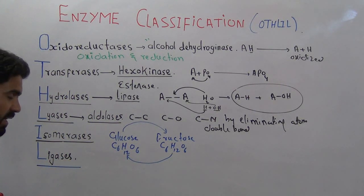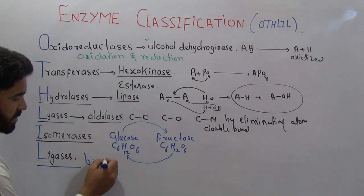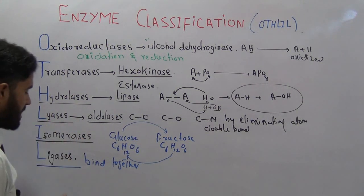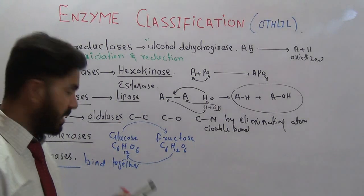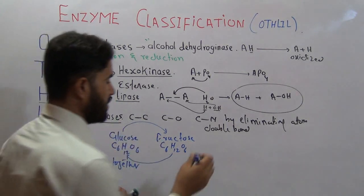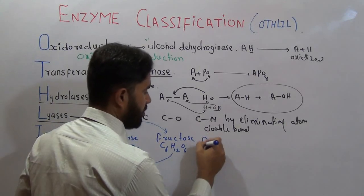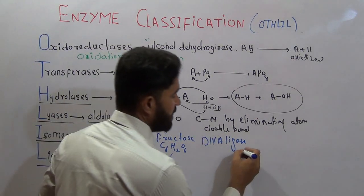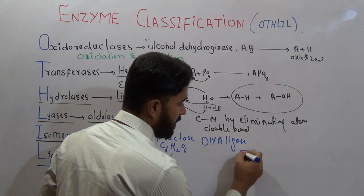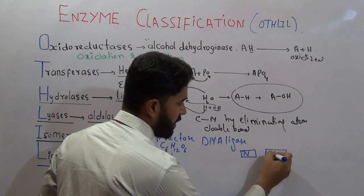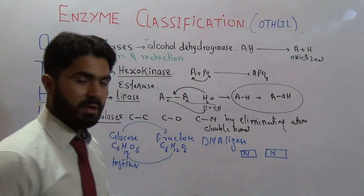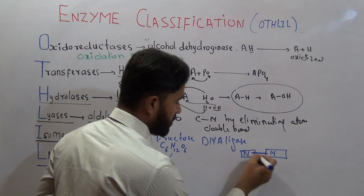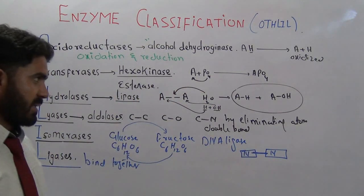Ligases are the last category. Ligases are those enzymes which bind molecules together — the opposite of lyases, where bonds are broken. One example is DNA ligase, which binds one nucleotide to another. The small rectangular boxes represent nucleotides, and the bond formed between two nucleotides is due to the enzyme ligase.